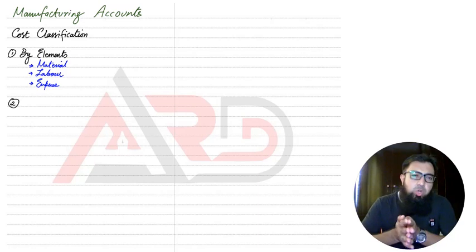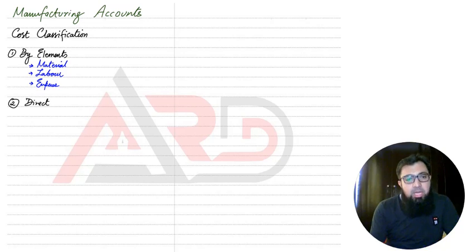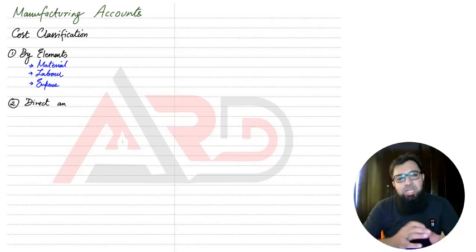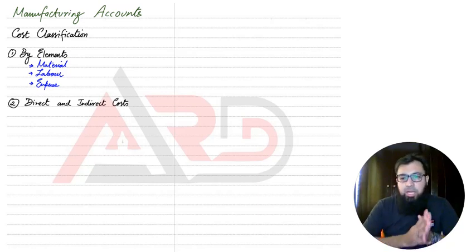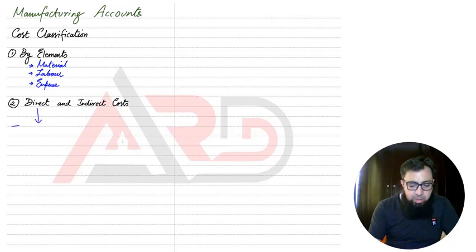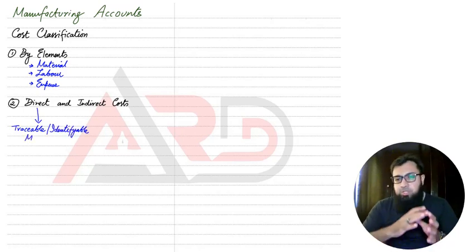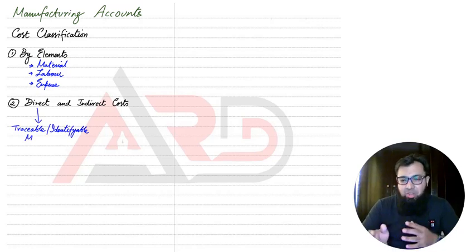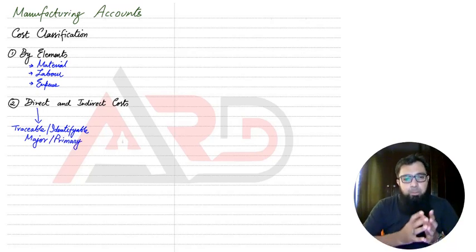So to make a mobile phone we need material, labor, and expenses. The second way to understand cost is that cost can be grouped into two categories: direct cost and indirect cost. Direct costs are costs that can be traced and identified into the product or service being manufactured. Any cost that is traceable, identifiable, or major is known as a direct cost, also called primary cost.